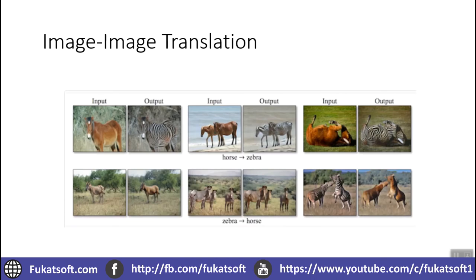Here is an example of image-to-image translation: converting zebras into horses and horses into zebras. In the first image we can see that we input a horse image and got the output image of a zebra — same scene, different texture. In the second row we can see that zebra images are being converted into horse images, with the same content and same setup, just the style transfer has been done.